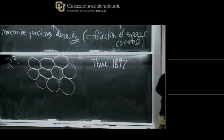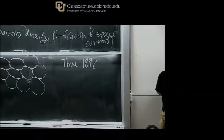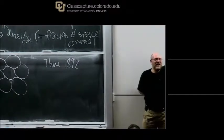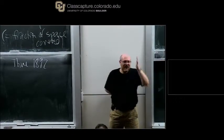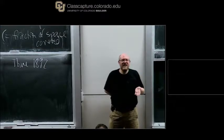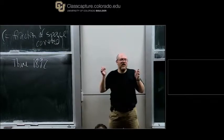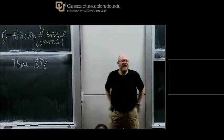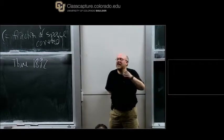What does it mean for a packing to be disordered? Drawing a boundary between order and disorder is hard. Periodic packings are definitely ordered; random packings are disordered. Exactly where you draw the line in between, I don't know. Even the question of whether high-dimensional packings are ordered or disordered — I don't even know how to formulate it precisely. I can formulate several versions, but it's not clear which is the ultimate one.